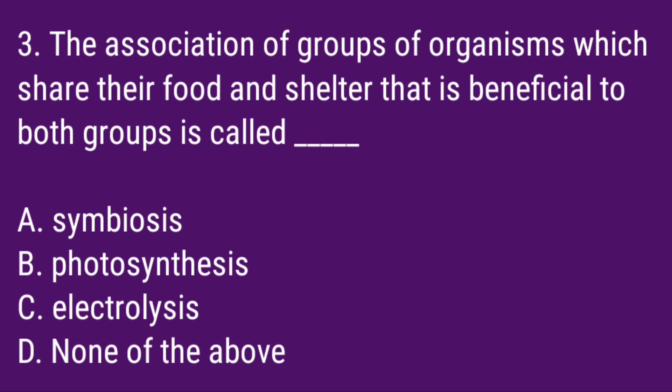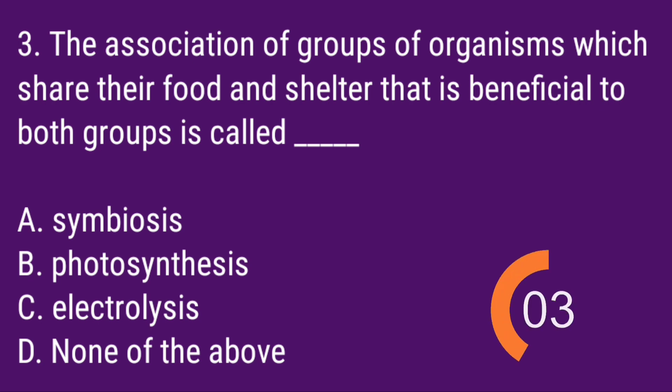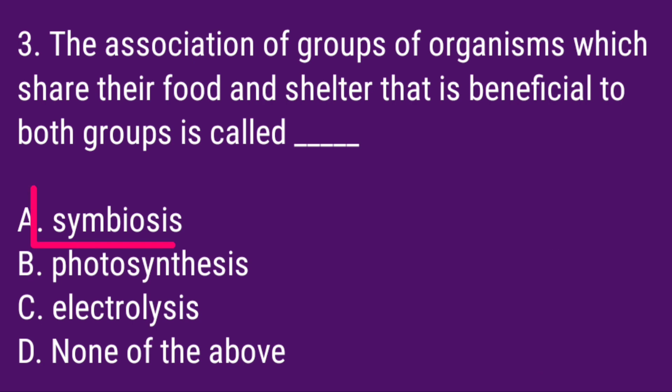Q3. The association of groups of organisms which share their food and shelter, that is beneficial to both groups, is called? Correct answer: Symbiosis.